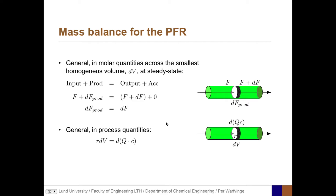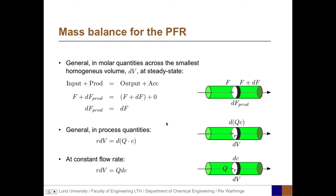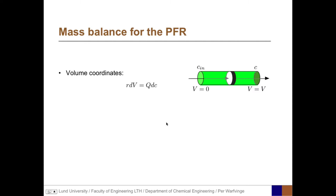Translating to process quantities, the equation becomes r·dV equals the differential of q times c. At constant flow, r·dV equals q·dC. The small production on the left-hand side is balanced by a small change in molar flux on the right side. This equation is expressed in volume coordinates: r·dV = q·dC. We can also express this mass balance in other coordinates.